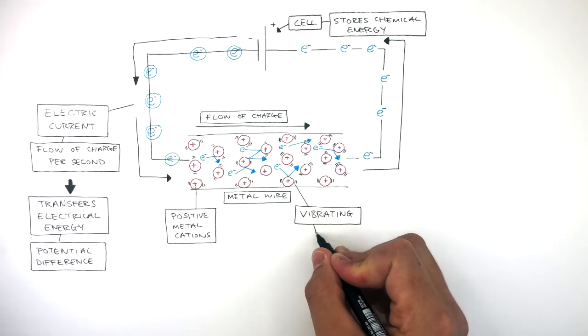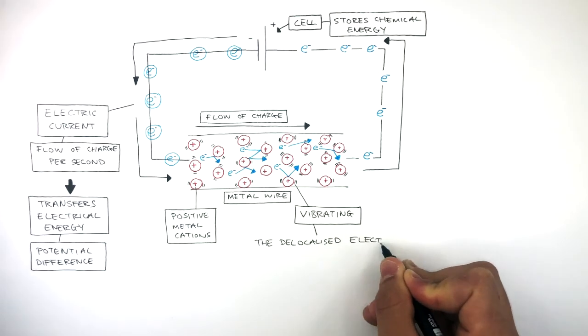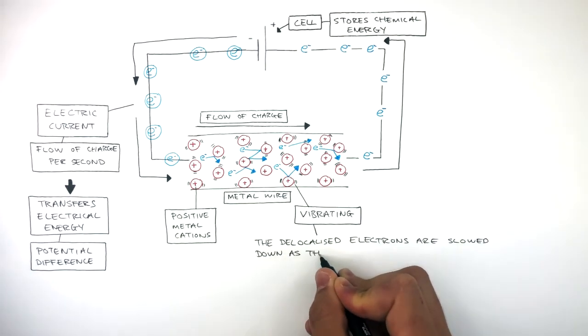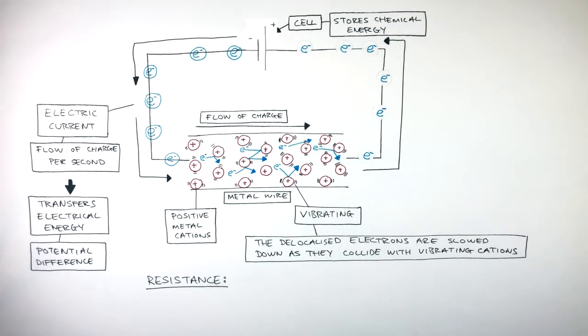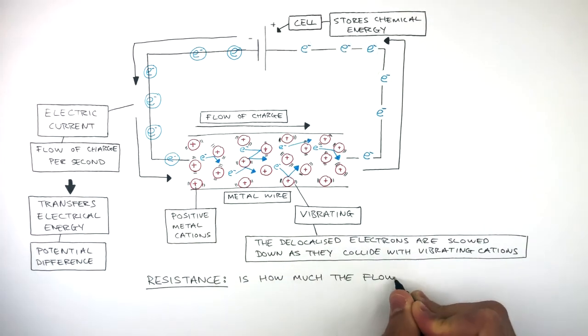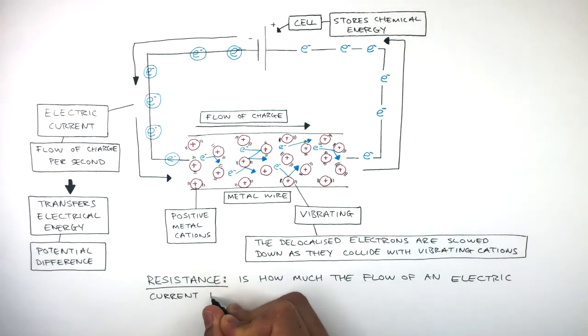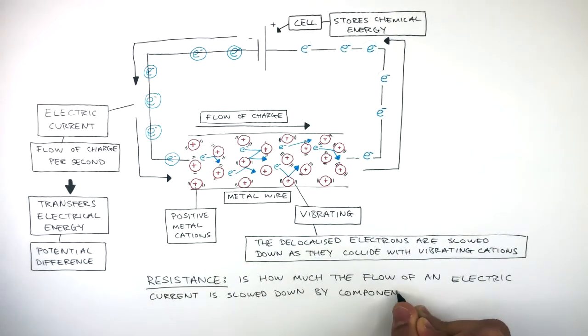Resistance takes place as the delocalized electrons are slowed down as they collide with the vibrating cations. The definition of resistance is how much the flow of an electric current is slowed down by components and wires.